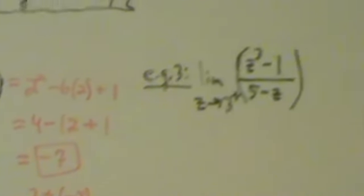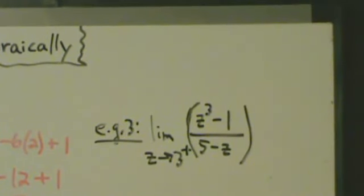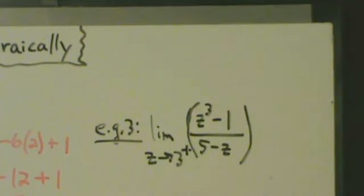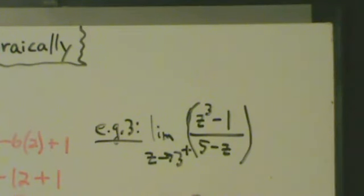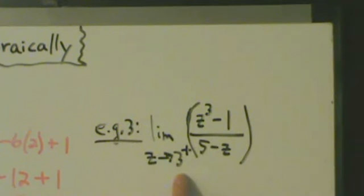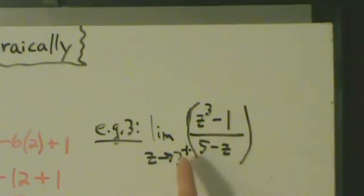Example 3: let's take the limit as z approaches 3 from the right of (z cubed minus 1) divided by (5 minus z). Here we're taking a one-sided limit, but when we do direct substitution and we're computing algebraically, it doesn't actually matter — the process is going to be the same. We're going to take the 3 and just substitute it in here. Anywhere we see a z, we're going to replace it with a 3.